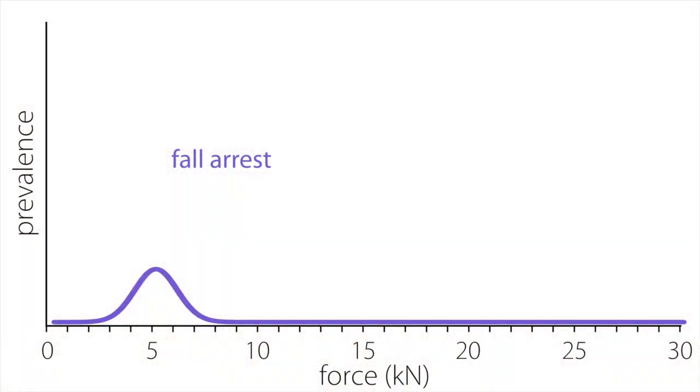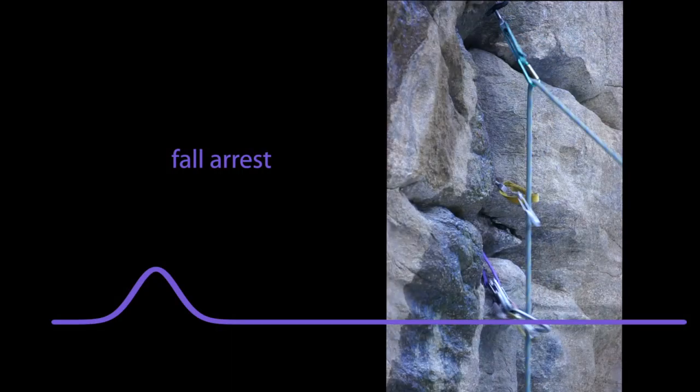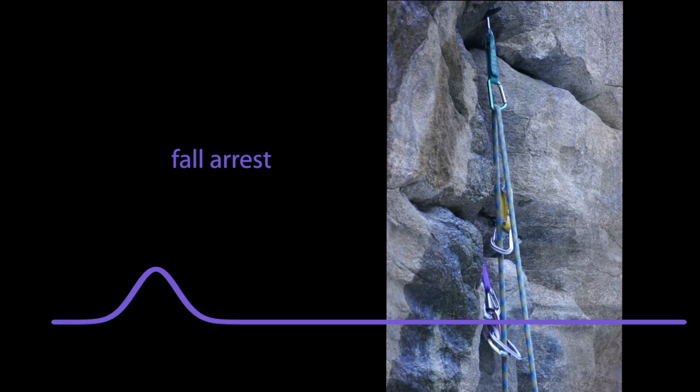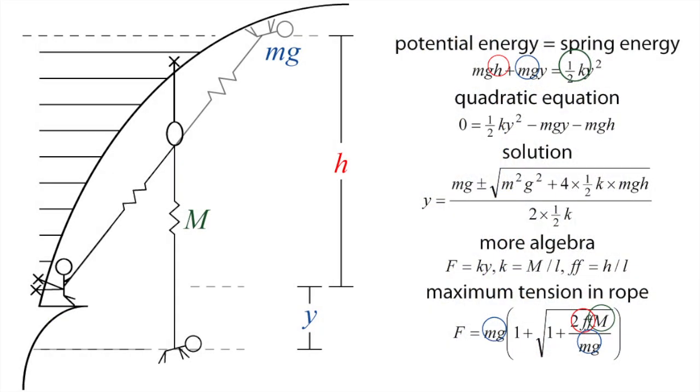Fall arrest challenges are well understood. The force is a relatively straightforward function of the climber mass, fall factor, rope modulus, and the belayer behavior.